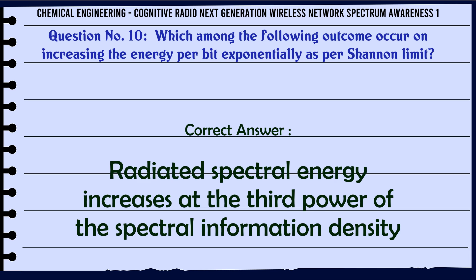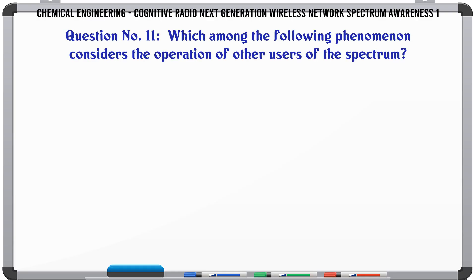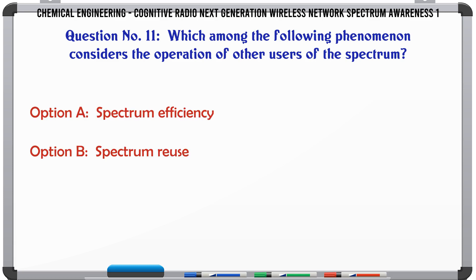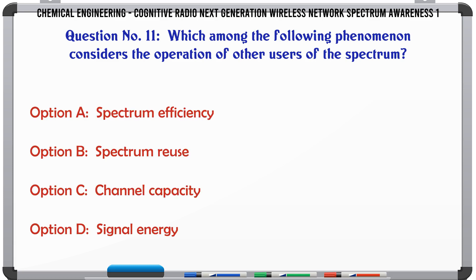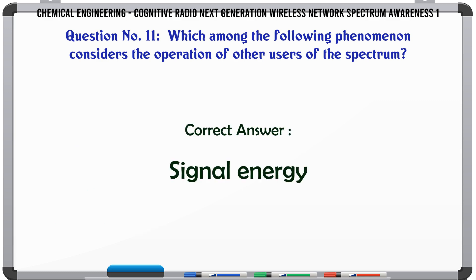Which among the following phenomenon considers the operation of other users of the spectrum? A. Spectrum efficiency. B. Spectrum reuse. C. Channel capacity. D. Signal energy. The correct answer is: Signal energy.